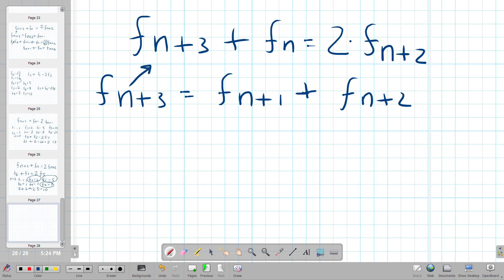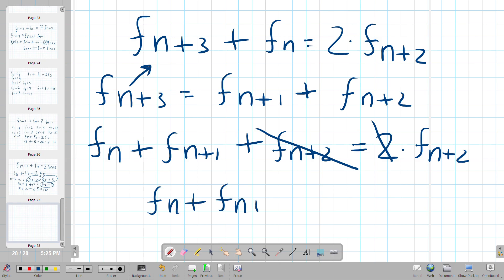So we substitute it in here and what do we get? We get F of N plus one and F of N plus two and that equals two times F of N plus two. We subtract this term and what do we get? We get the usual formula for the Fibonacci sequence. Finally, I think I said it right.